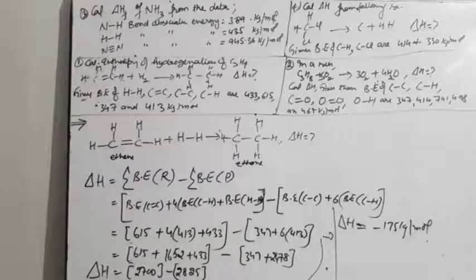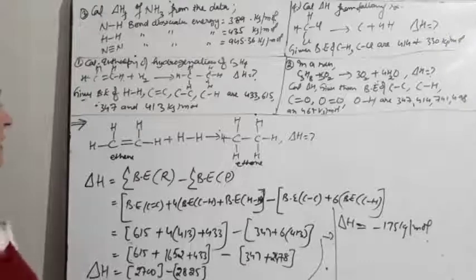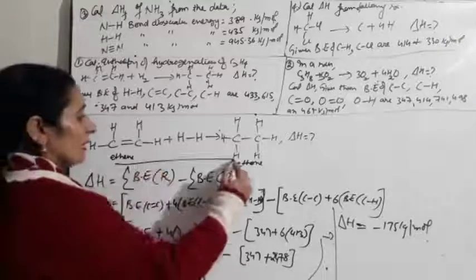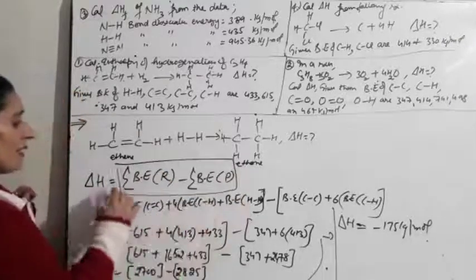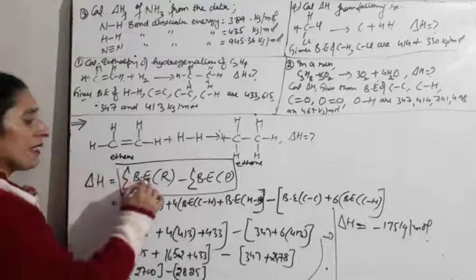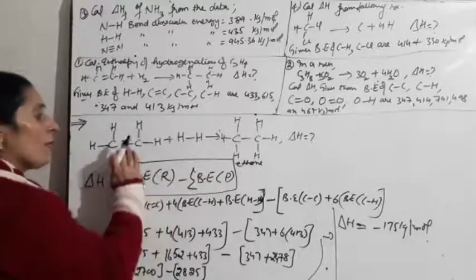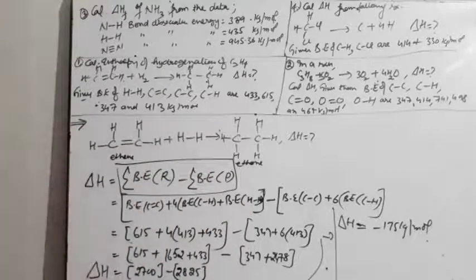So using bond enthalpy, you can calculate delta H for any chemical reaction. The key is to know which bonds are present and count them correctly, then use: delta H = Σ(bond enthalpy reactants) − Σ(bond enthalpy products).